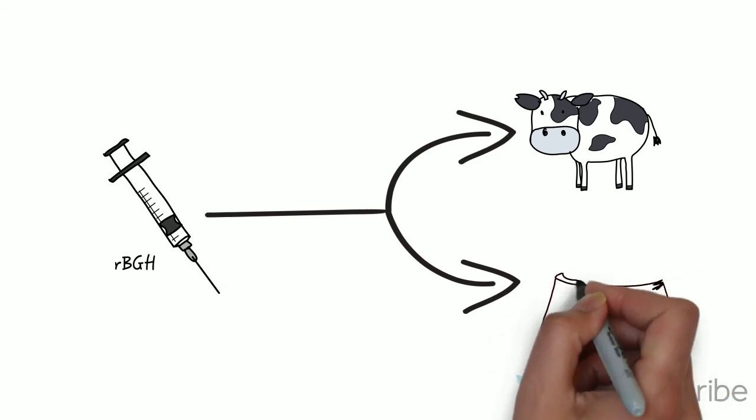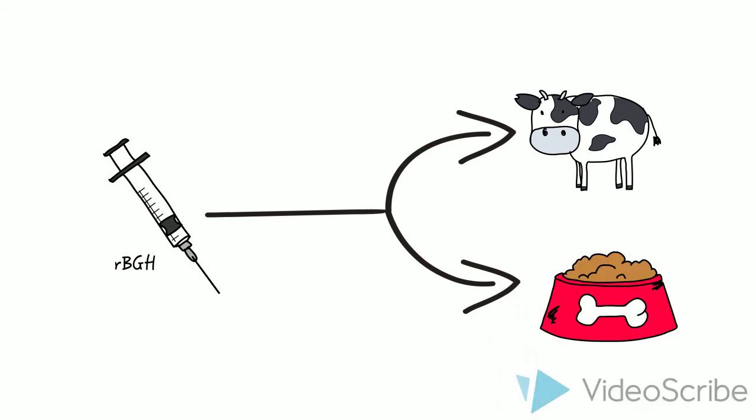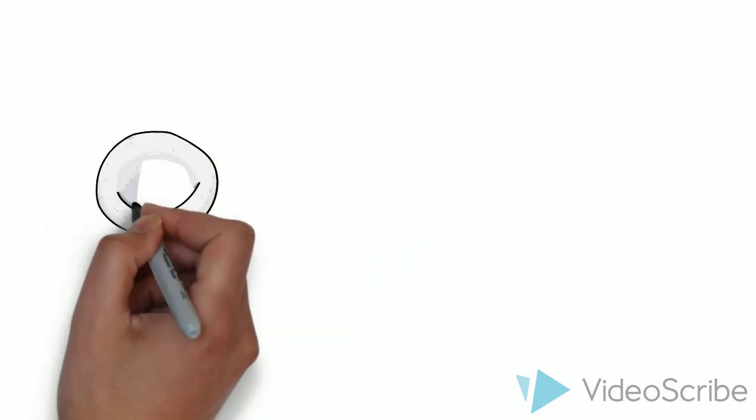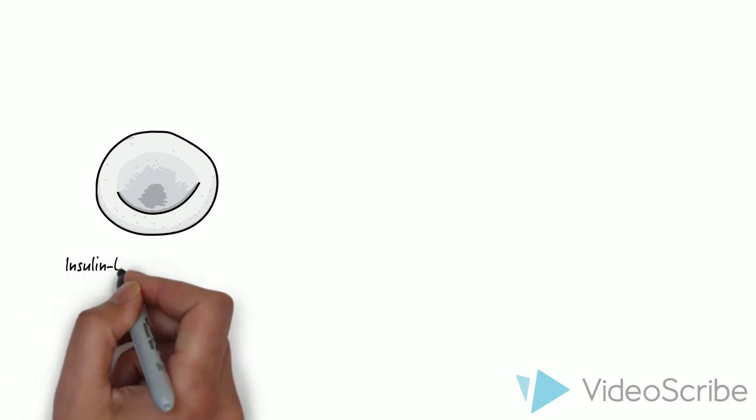Once it is in the bloodstream, RBGH acts like the natural growth hormone in cows and increases something called insulin-like growth factor 1.